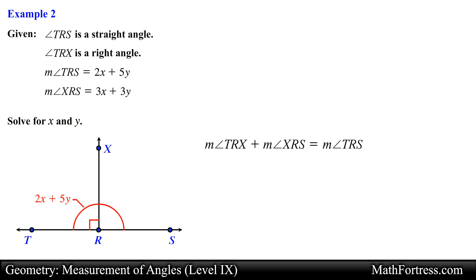Since angle TRS is a straight angle, the sum of the measure of angle TRX and XRS must equal 180 degrees. Since the measure of angle TRX is 90 degrees, we can conclude that the measure of angle XRS is also 90 degrees, hence both angles are congruent, meaning that both have the same measurement.